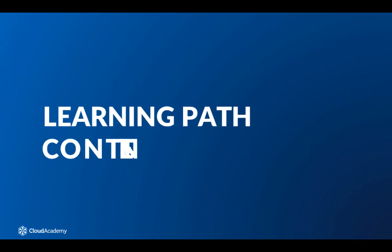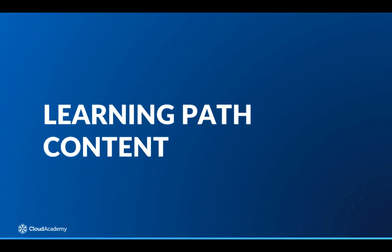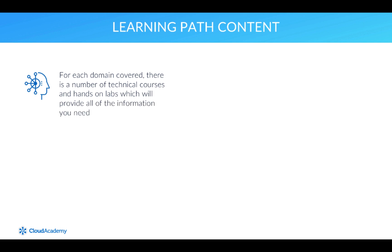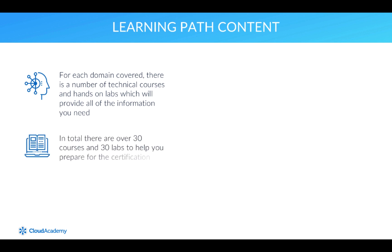So what is involved within the learning path? The learning path has been created in such a way that for each domain covered there is a number of technical courses and hands-on labs which will provide you with all the information you need to become prepared to master each domain control point discussed. In total there are over 30 courses and 30 labs providing you with all the knowledge and practical experience to help you prepare for this certification.